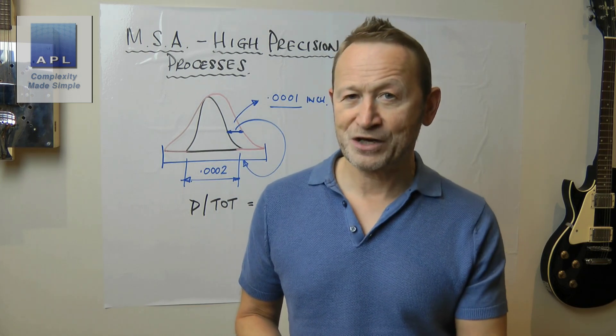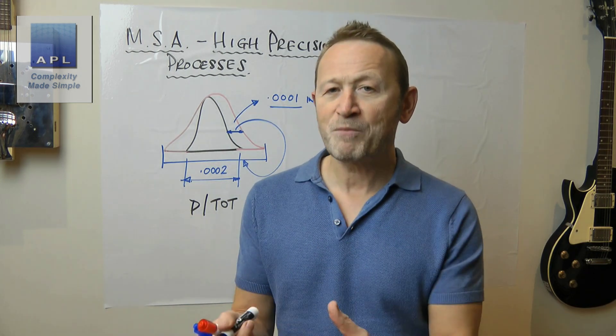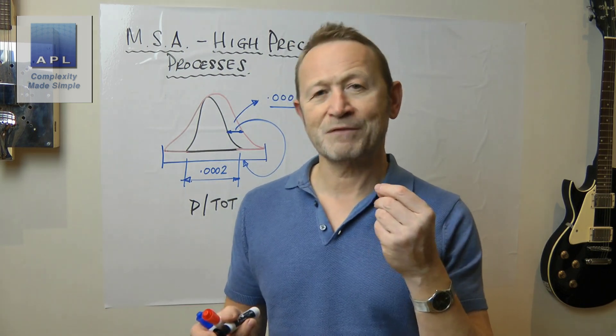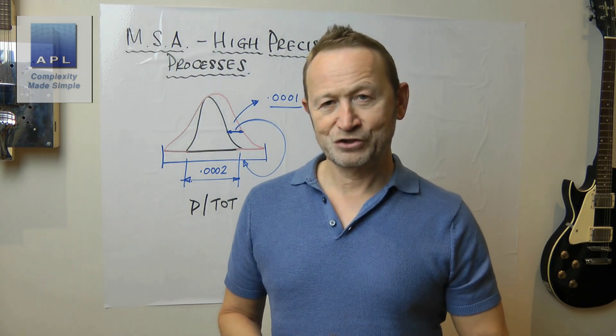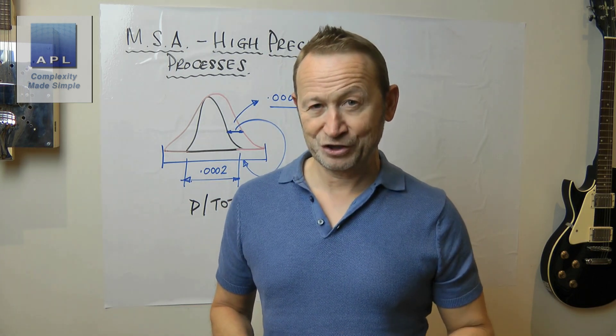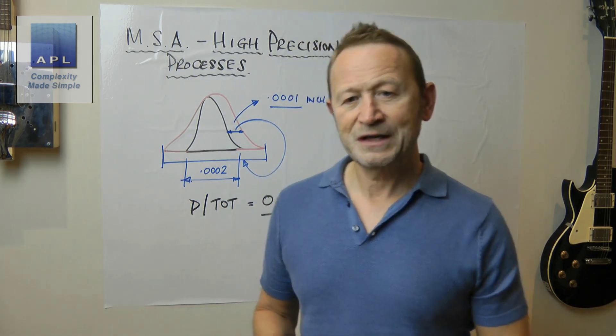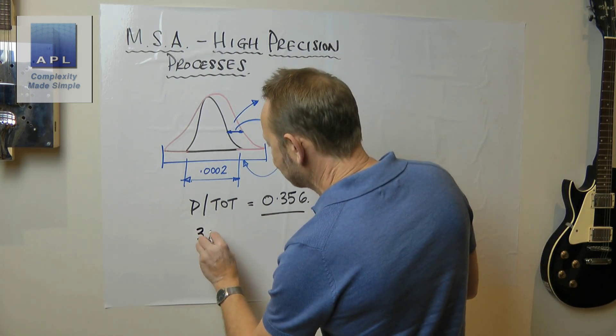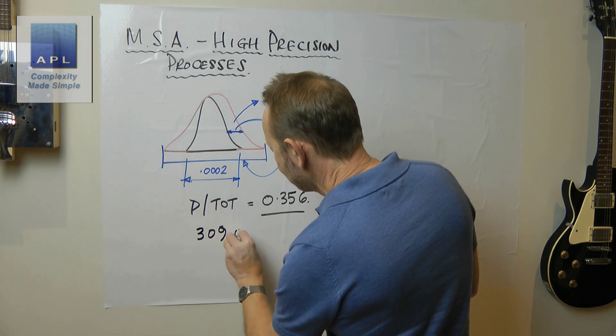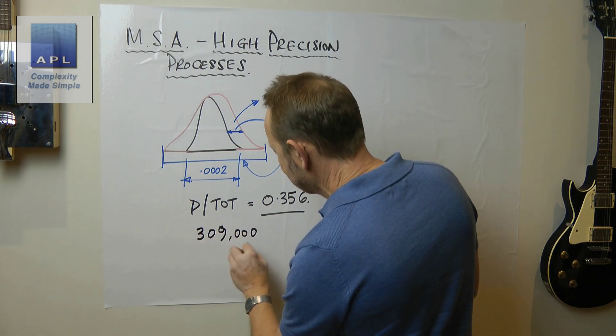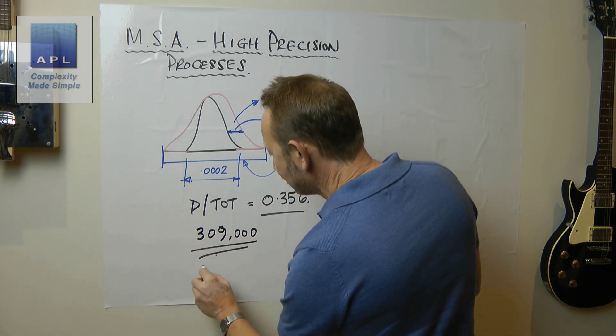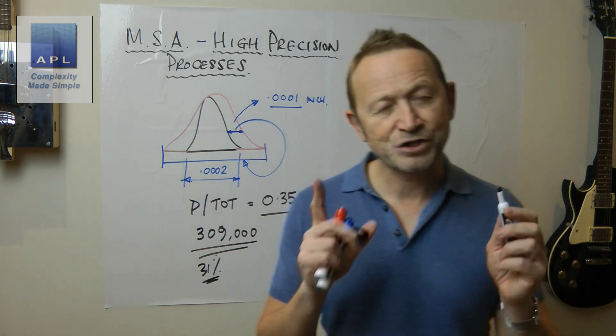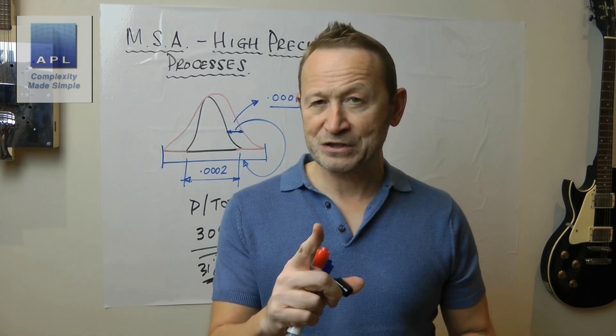Now there is a slight problem and we need to look at another diagram on the MSA that's been done. So if we go back to the Excel pages, let's take a look at the misclassification graph. You can see the misclassification graph here and it says that the misclassification rate is 309,000 in a million, in other words almost 31% of the parts could be misclassified.